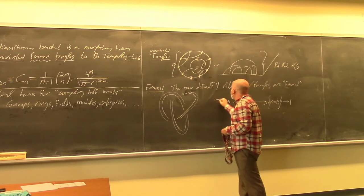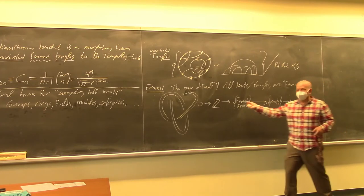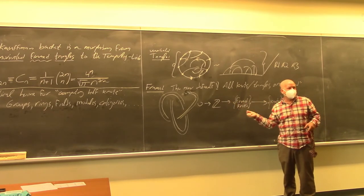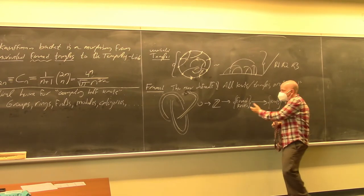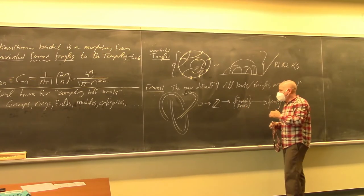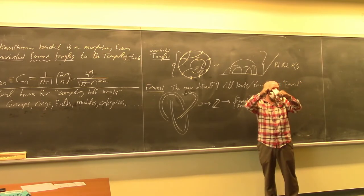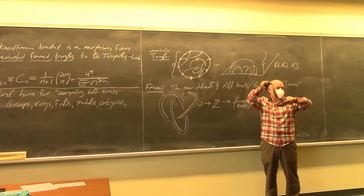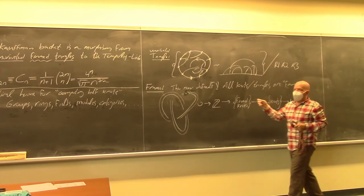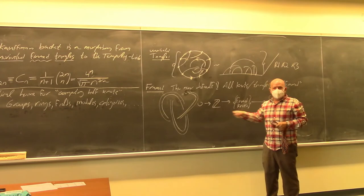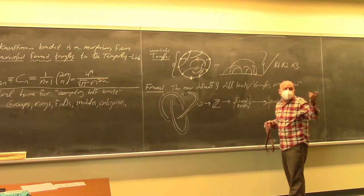This notation is a bit loose since it's not group theory, but you understand the meaning. Basically, any two framings of the same knot differ by a single integer. So in some sense framed knots are just a little bit more than knots — just a single integer more.